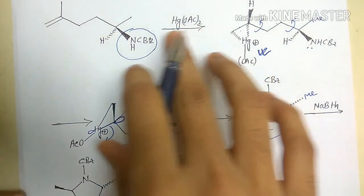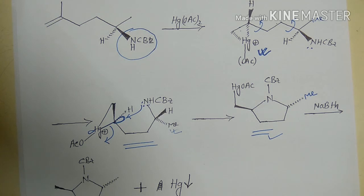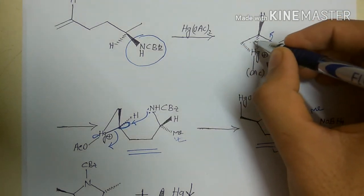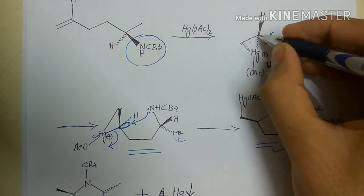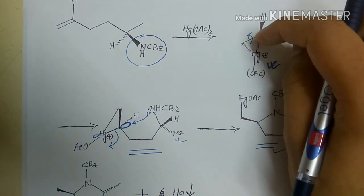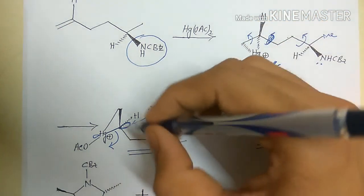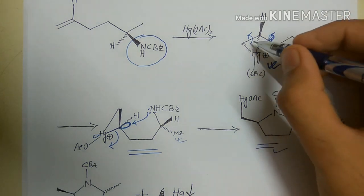The two critical steps are: the face from which mercury attacks, and the bond rotation to achieve anti alignment for nucleophilic attack. There is one correction to note: it is this bond — not the other one — that must be rotated. The other bond is fixed. Only this specific bond is rotated to achieve the correct arrangement, and all other aspects of the explanation are correct.